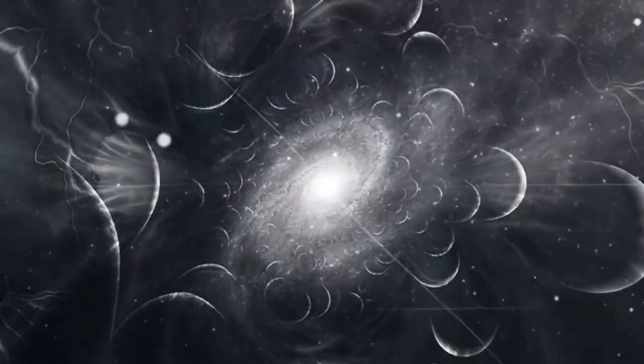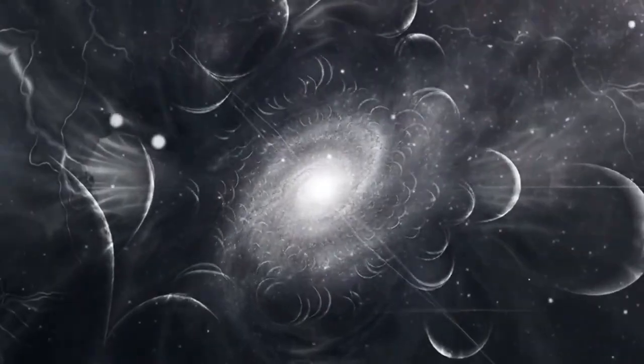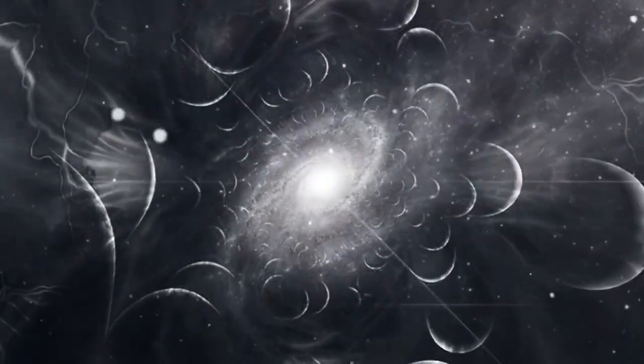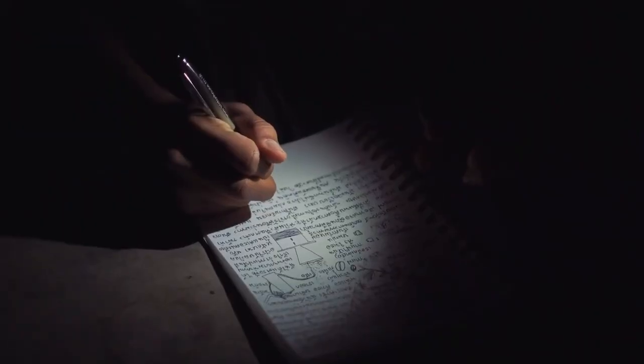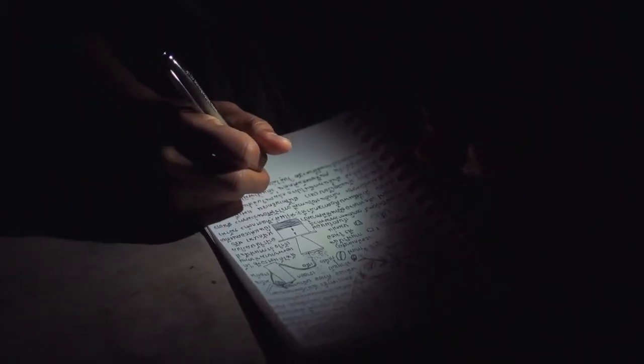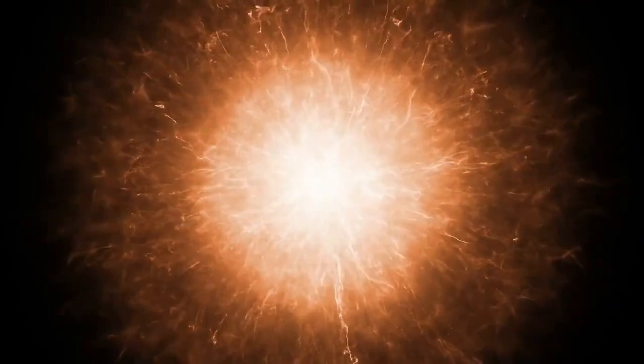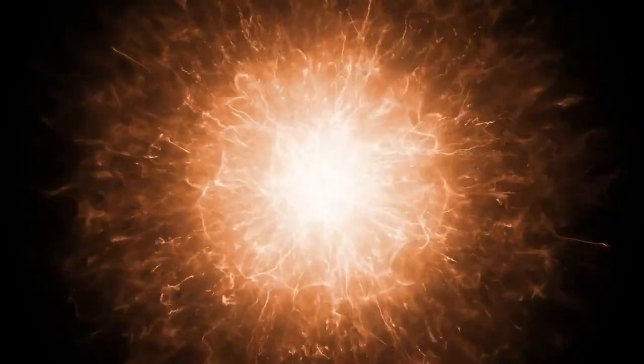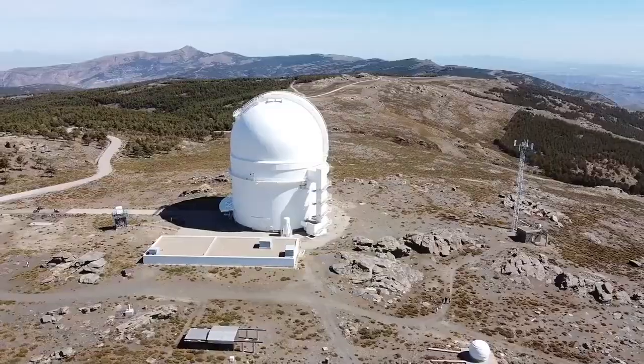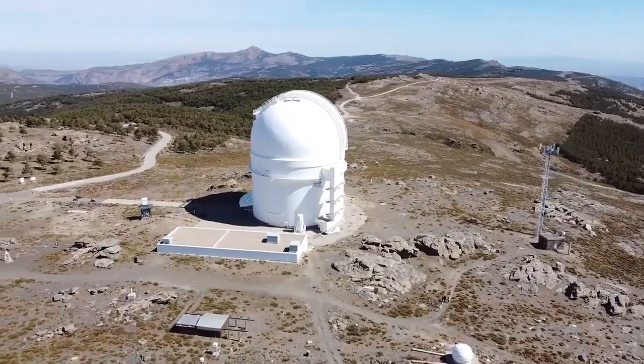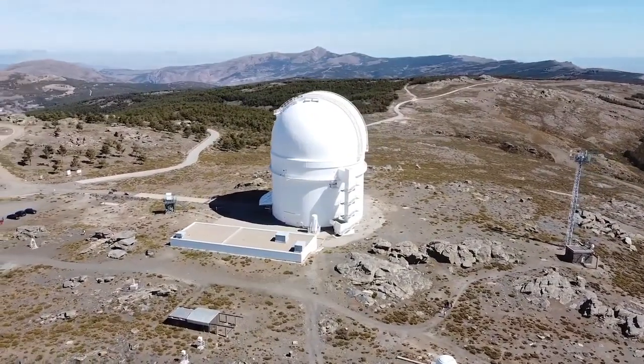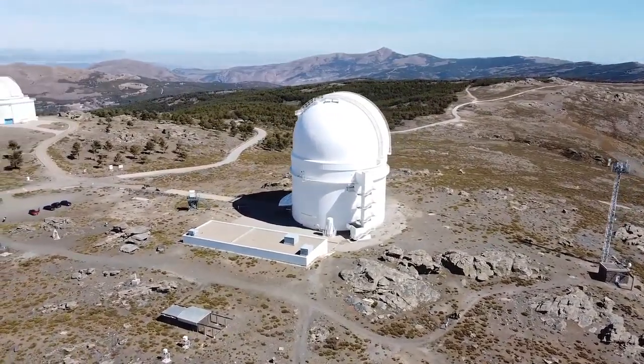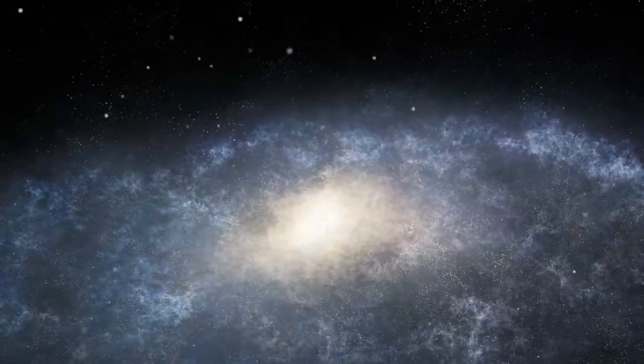Even light, the fastest thing in the universe, which can circle Earth seven times in a single second, begins to seem sluggish when we apply it to cosmic distances. Now consider our whole solar system as big as it can get. It's a mere speck in the Milky Way galaxy. The Milky Way contains approximately 300 billion stars, each having dozens of planets, moons, and asteroids orbiting them.